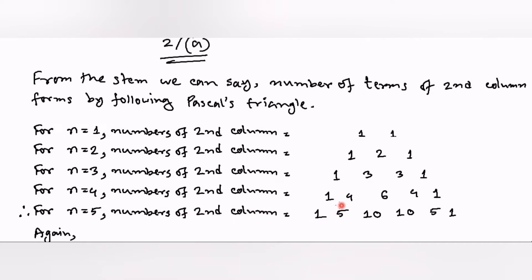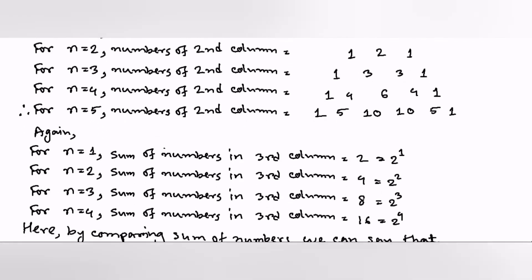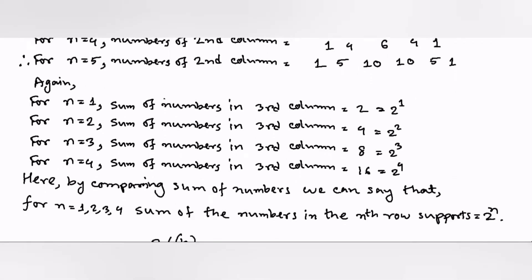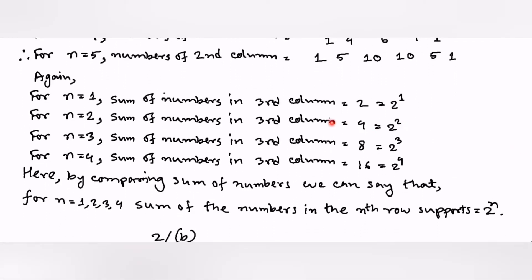We see that every time terms are added to get the next term. The last row for n=5: first we write 1, then the second term is the summation of 1 and 4, giving 5; then 4+6 is 10; then 6+4 is 10; then 4+1 is 5; and at last 1.